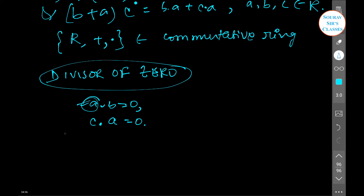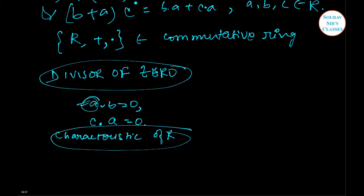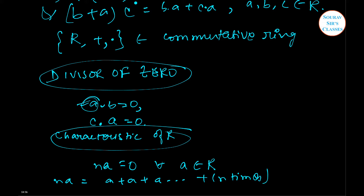We will also come across a term known as the characteristic of R. The characteristic of R is the least positive integer n, if n exists, such that n times a equals zero for all a belonging to R, where n·a means a plus a plus a added n times. If no such positive integer exists, R is said to be of characteristic zero.